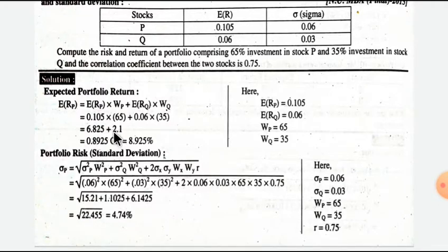That's 6.825 plus 2.1 equals 0.8925 or 8.925%.